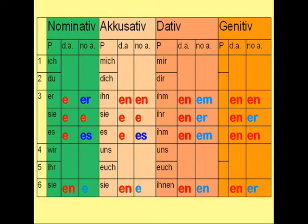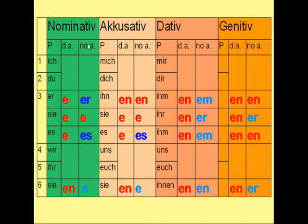Here you see the endings for adjectives that have no articles in front of them. I use this column — previously used for indefinite articles — this time for no articles. As you can see, the endings are the same as for the indefinite articles, except for three endings in blue, and additionally the endings in the dative case, genitive case, and plural are different for no articles in comparison to definite articles.